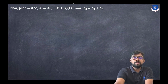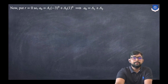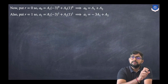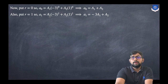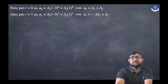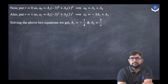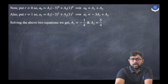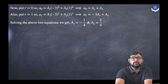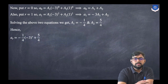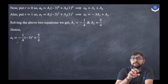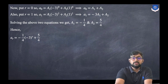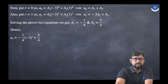Putting r = 1: a_1 = a_1 * (-3)^1 + a_2 * 1^1 = -3*a_1 + a_2. So -3*a_1 + a_2 = 2. Solving these two equations gives a_1 = -1/4 and a_2 = 5/4. Substituting back, the final solution is: a_r = (-1/4) * (-3)^r + (5/4) * 1^r.